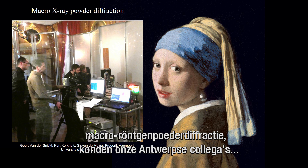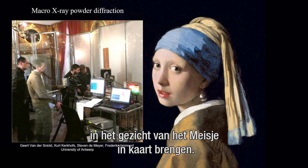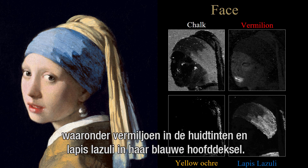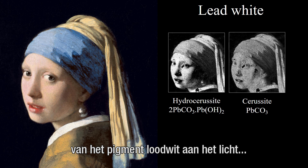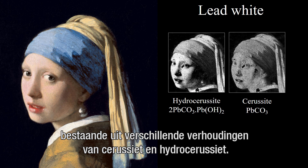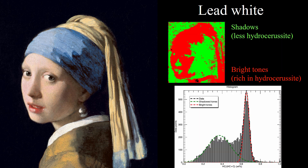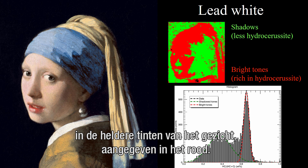Using one of the newest imaging techniques — macro X-ray powder diffraction — our Antwerp colleagues were able to plot, with high analytical accuracy, the distribution of crystalline materials in the girl's face. The results showed the use of common pigments in the girl's head, including vermilion red in the flesh tones and lapis lazuli in her blue headdress. But it also brought to light Vermeer's use of two distinct types of the pigment lead white, made up of varying ratios of cerussite and hydrocerussite — the main crystalline components of 17th century lead white. Lead white rich in hydrocerussite was found exclusively in the bright tones of the face, indicated here in red.